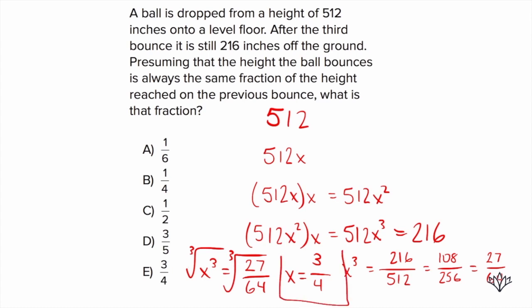So x equals 3 fourths, which is answer choice E. Thank you so much for hanging out with me. Make sure to watch the rest of the videos in this series to get the help you need for the PSAT, SAT, and ACT, and check out our other series. If you haven't already, like and subscribe — because this is obviously the best thing that's ever happened to SAT prep.